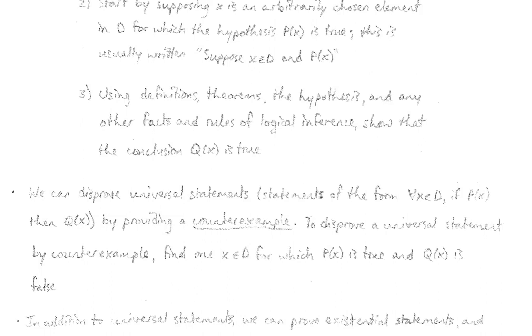To disprove a universal statement by counterexample, all you have to do is find one guy in that set for which P(x) is true and for which Q(x) is false. So you have your universal quantified statement for all x in D, if P(x) then Q(x). If you can find even one, just one guy in D such that P(x) is true and Q(x) is false, then you have disproven that universal statement. You have provided a counterexample.